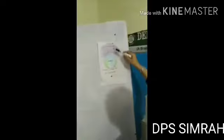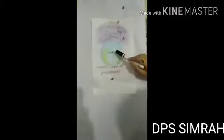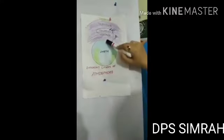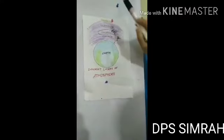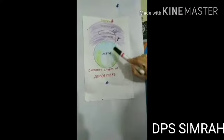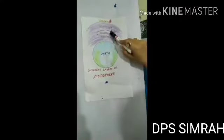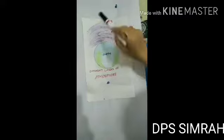Now go to this picture. In the earth's atmosphere we have four layers. That is troposphere, stratosphere, thermosphere and exosphere.